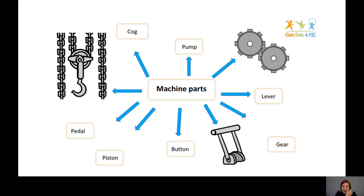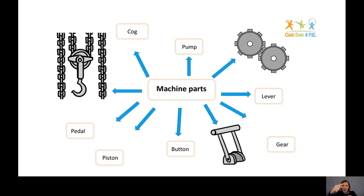We are going to become a machine today. Here are different parts of a machine: cog, pump, lever, gear, button, piston, pedal — many different parts. I've got a picture of some cogs. A lever is something that you can pull — can you see that big picture of the lever at the bottom?